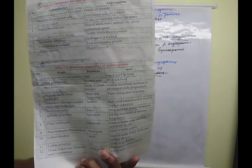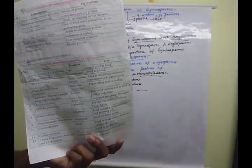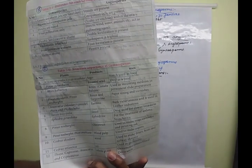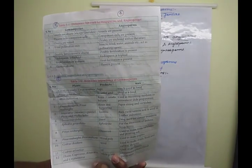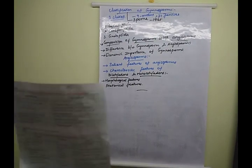Taxol is a very important product obtained from Taxus baccata, used mainly for cancer treatment. Ephedrine is obtained from Ephedra gerardiana and is used in the treatment of bronchial diseases and asthma — it is a very important drug.